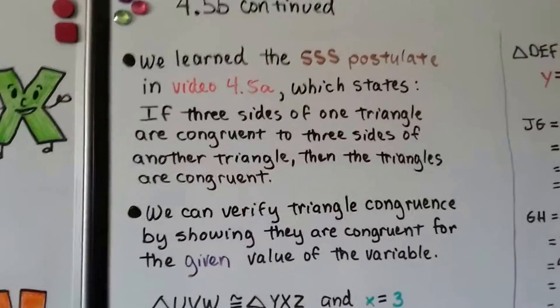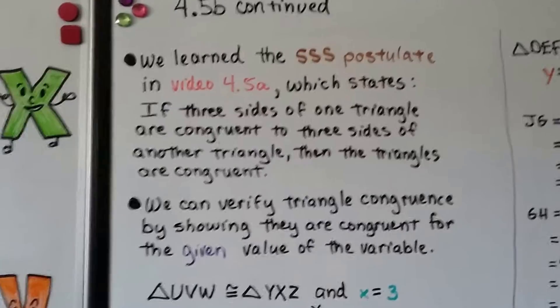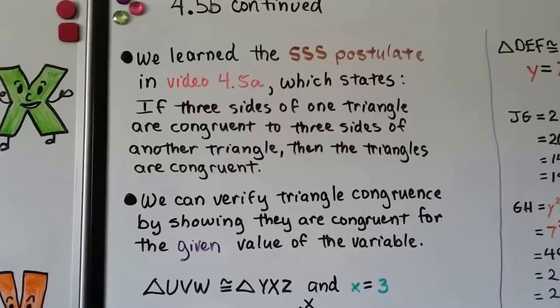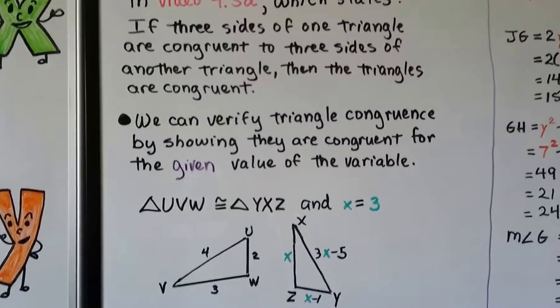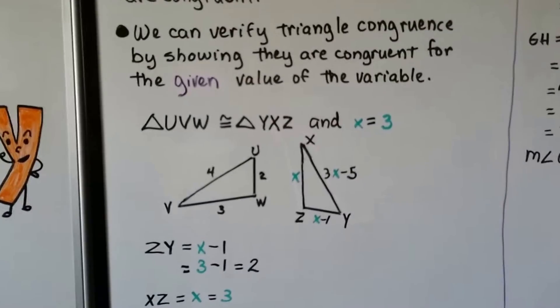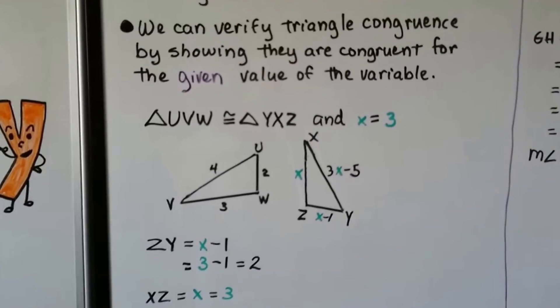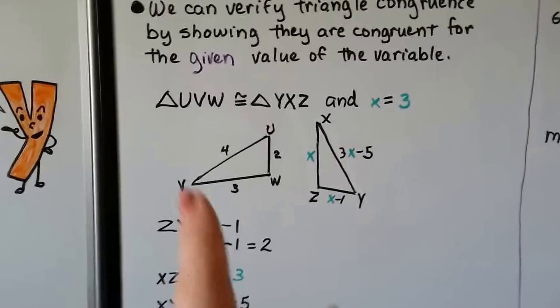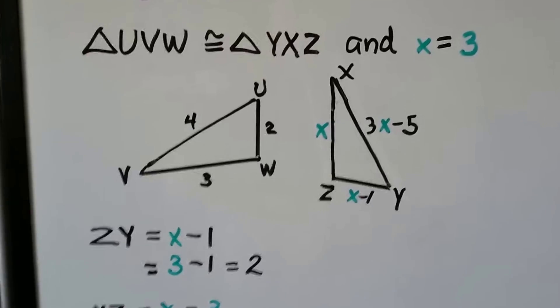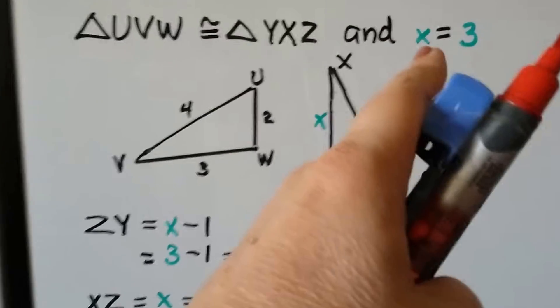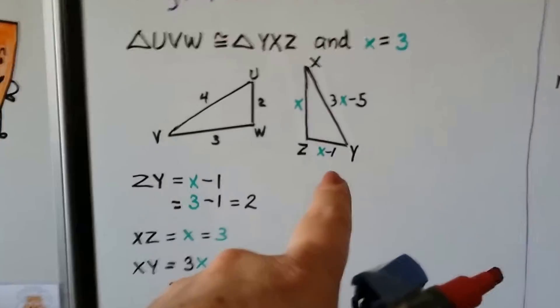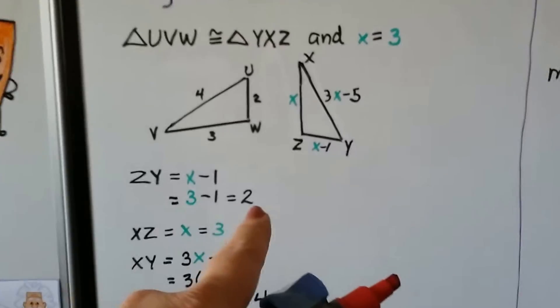We learned the SSS, side-side-side postulate in video 4.5a, the last video, which states if three sides of one triangle are congruent to three sides of another triangle, well then the triangles are congruent. We can verify triangle congruence by showing they are congruent for the given value of the variable. We have a given that triangle UVW is congruent to triangle YXZ and that x equals 3. We've got these two triangles - it just looks like this one turned, rotated into that position. So ZY equals x minus 1, which is 3 minus 1, which is 2.